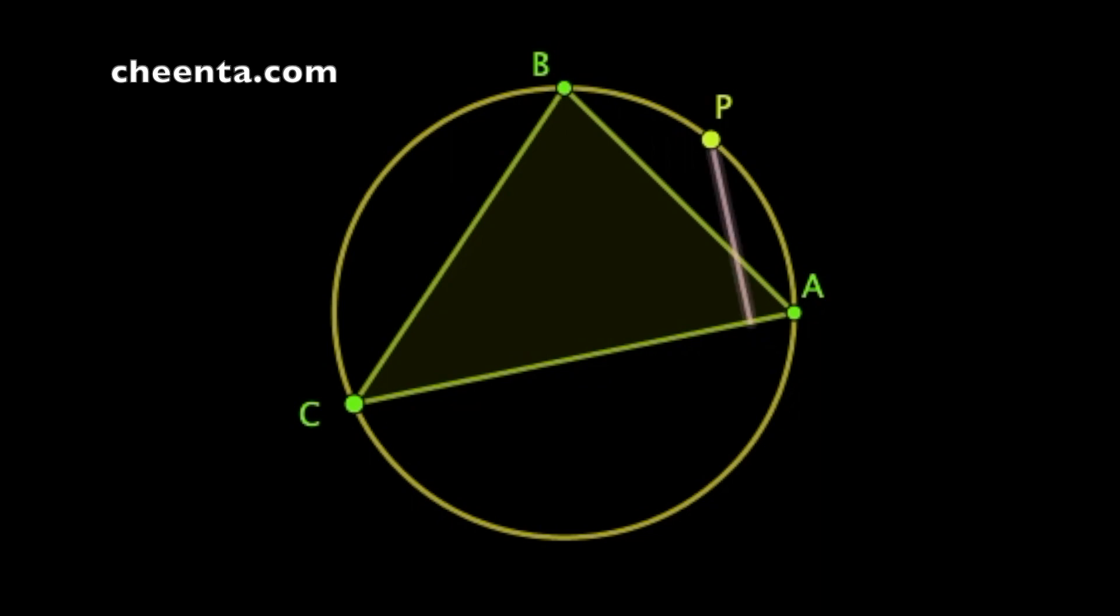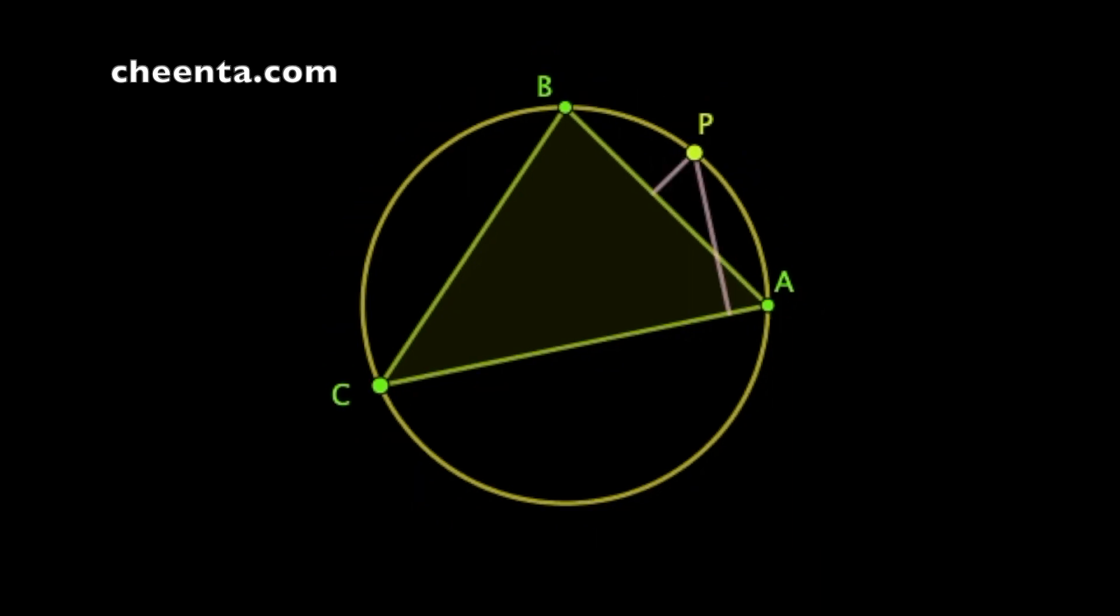Next drop perpendiculars from P to the sides of the triangle. We may have to extend the sides to mark the feet of the perpendiculars. Alright so you have this picture now.